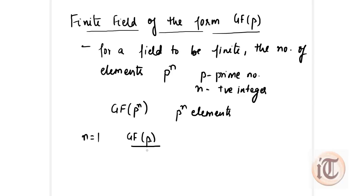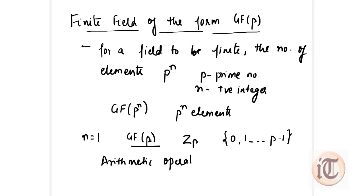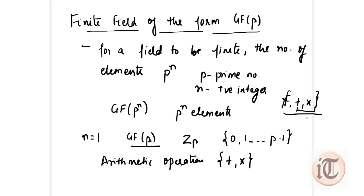This field can be a set Z of P, which contains values from 0, 1 up to P minus 1, with two arithmetic operations: plus and star. In the field we have the property represented as F comma plus comma star. We satisfy all the following conditions for this algebraic structure to be a finite field. This is how we define the Galois field of the form GF(p).